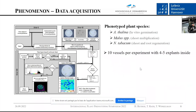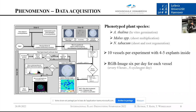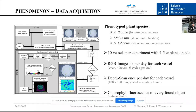Here you see the data acquisition workflow. We have already imaged three different plant species at different developmental phases. Each experiment contained ten vessels with five explants, so 50 plants per experiment. We captured RGB images six times per day for each vessel, performed RGB scans with the laser distance sensor once per day for each vessel, and we could measure the chlorophyll fluorescence of every detected plant.